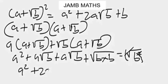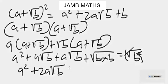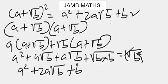So we are left with a squared, and a square root of b plus a square root of b gives us two a square root of b, plus b — since square root of b times square root of b simplifies to b. That's how we get a squared plus two a square root of b plus b.